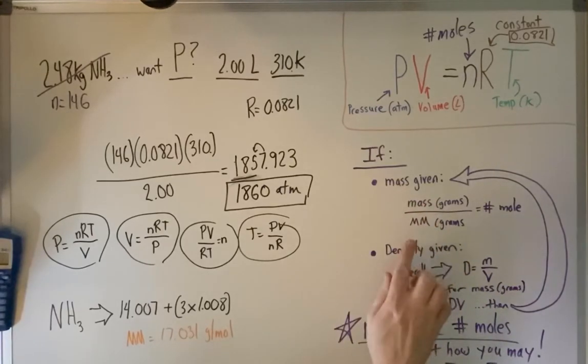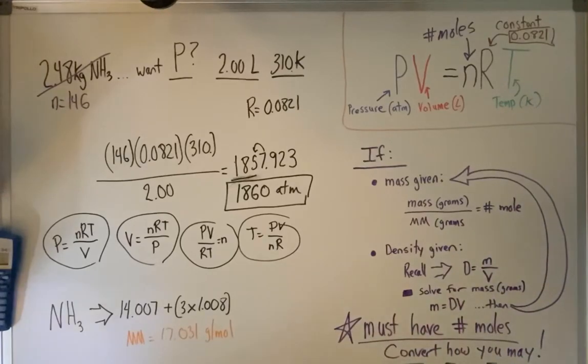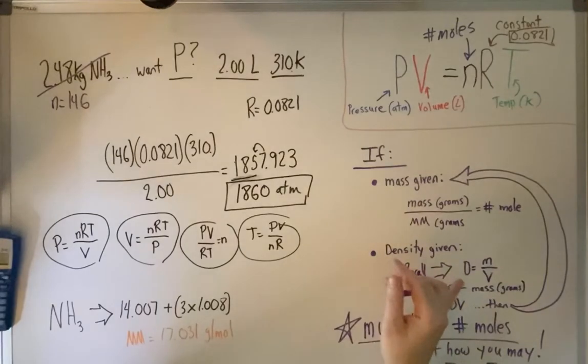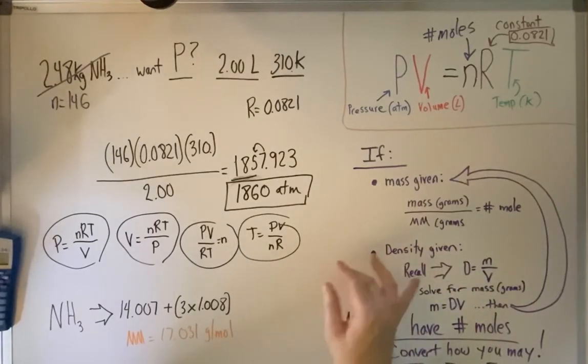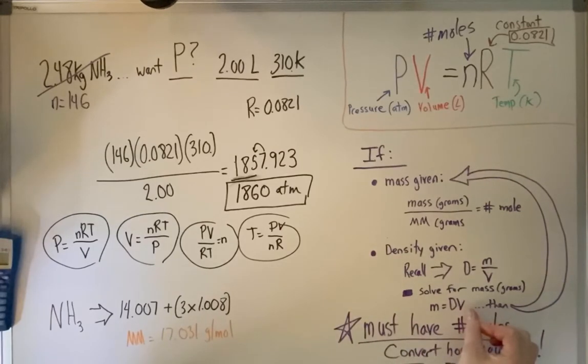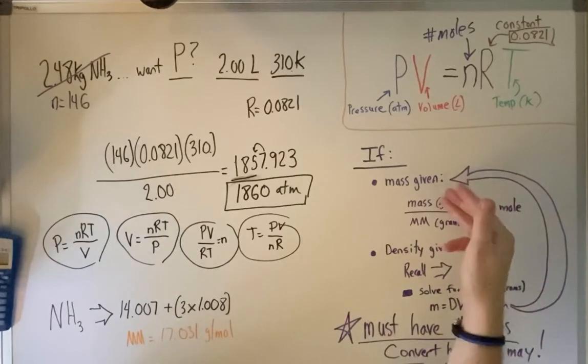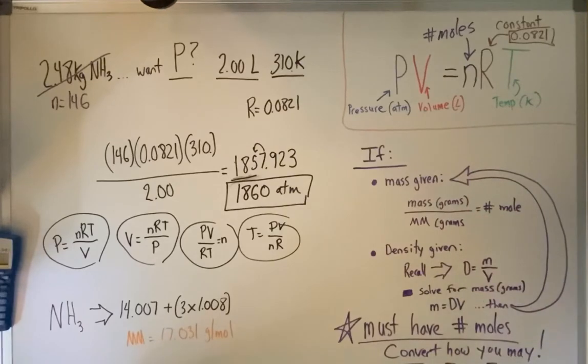So once again, if mass is given, you convert to number of moles. Sometimes you might be given density. So if you're given density, you're going to have to convert to mass again. So you have to solve because D equals m over V. So mass is equal to density times volume. And then of course, now that you have the mass, you can find a number of moles. Just like we did. So, again, must have number of moles. Convert how you may. If you're not given number of moles or you're given grams, you must always convert it to number of moles.